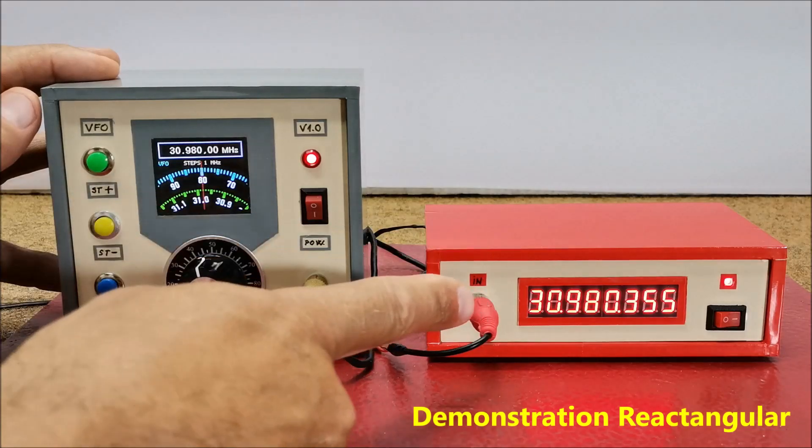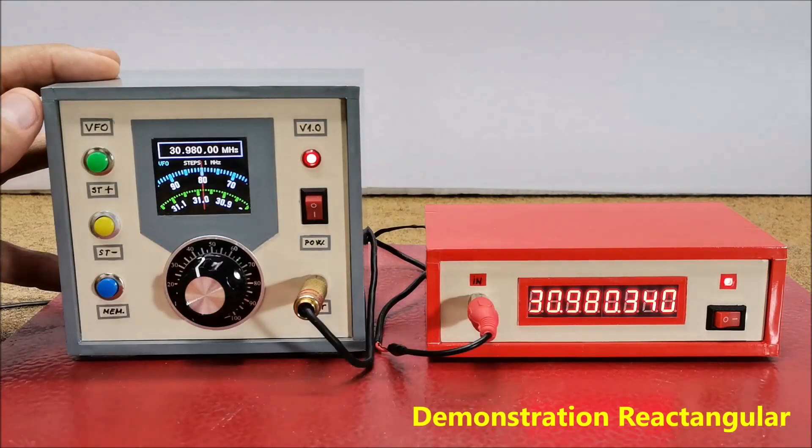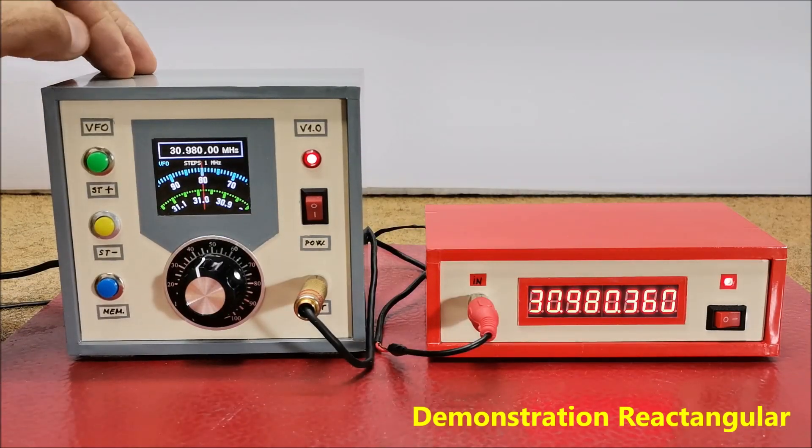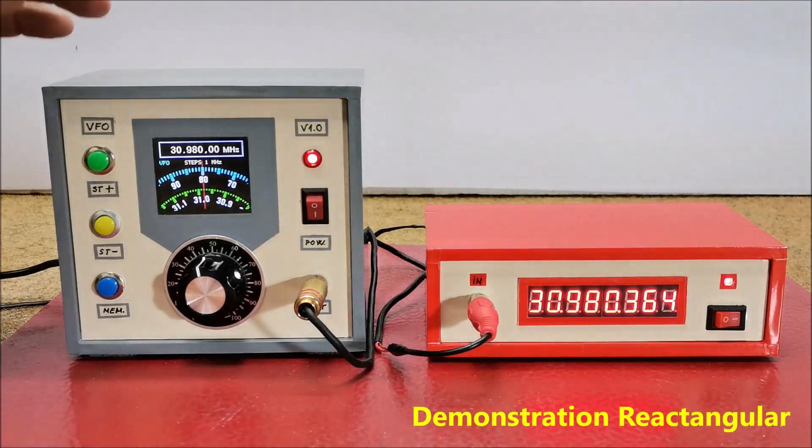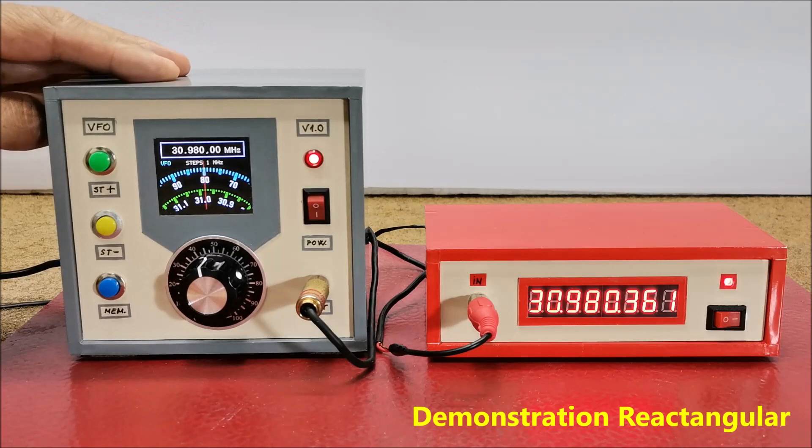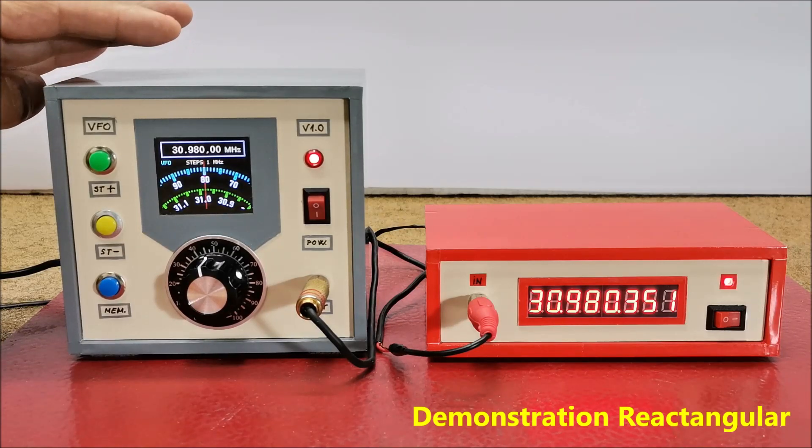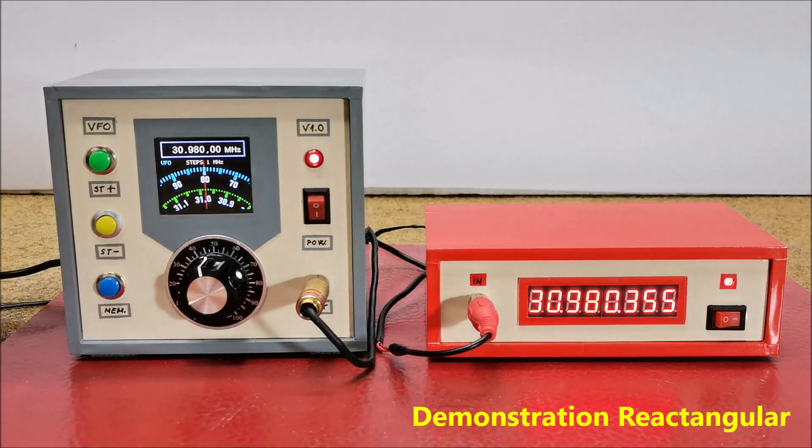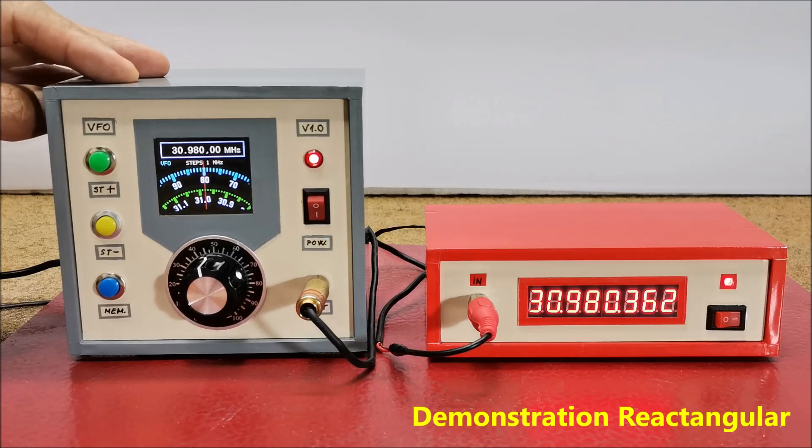As can be seen, the frequency of the generator and the frequency meter differ by a certain minimum value, but since this is not a laboratory professional device, we don't know whether the fault is with the generator or the frequency meter. However, this is a very small difference and can be ignored.